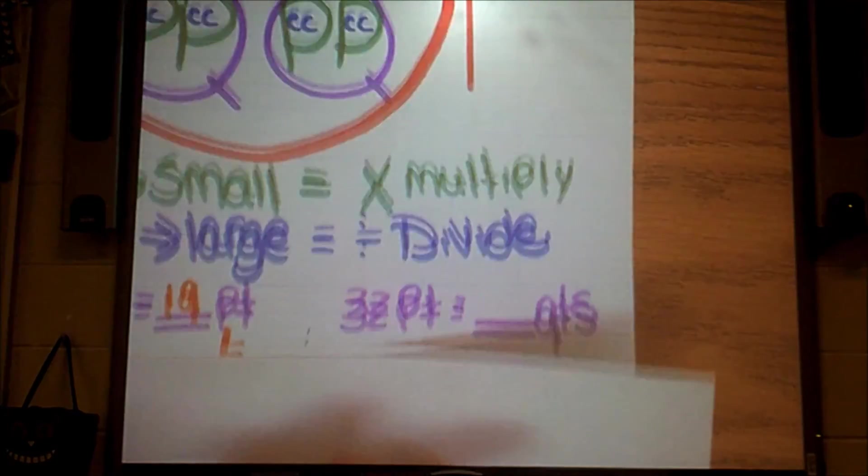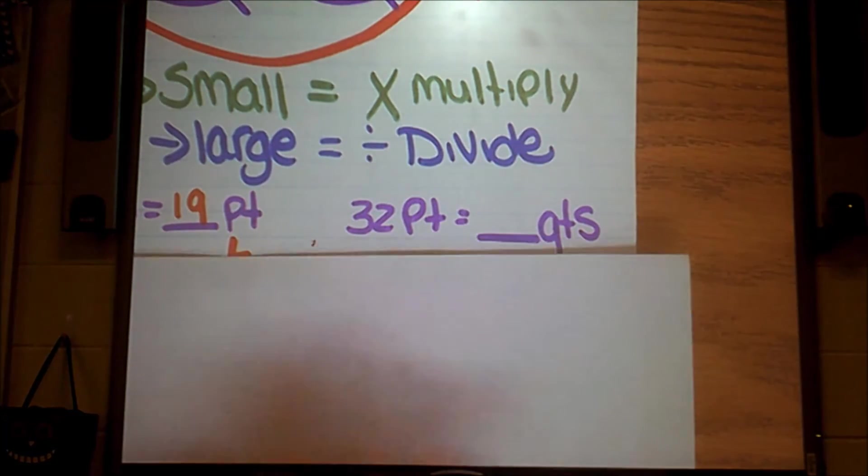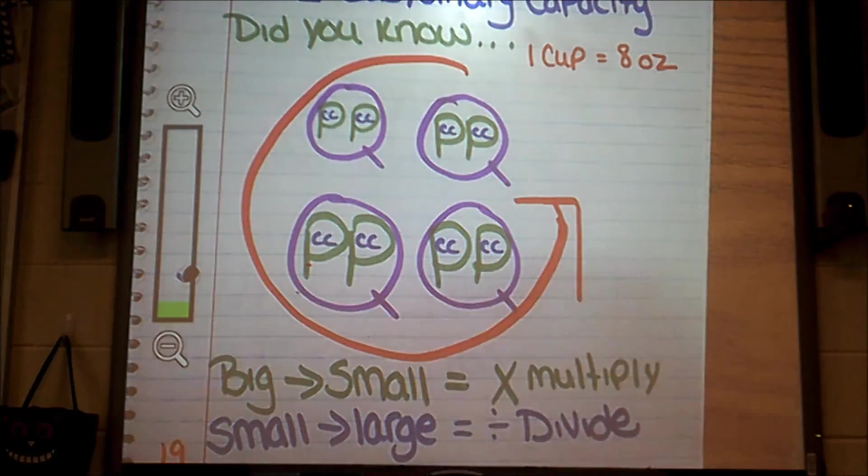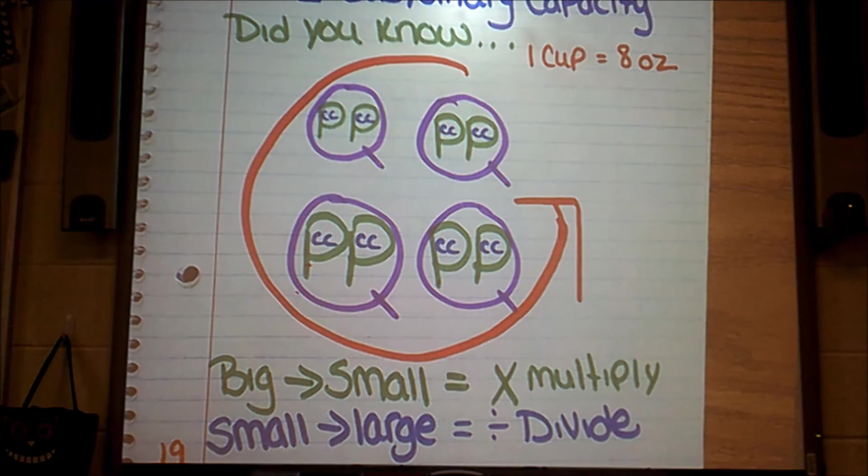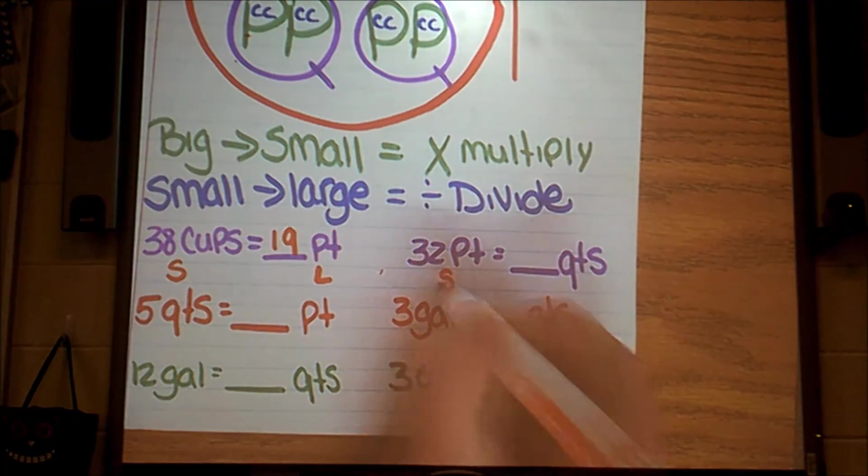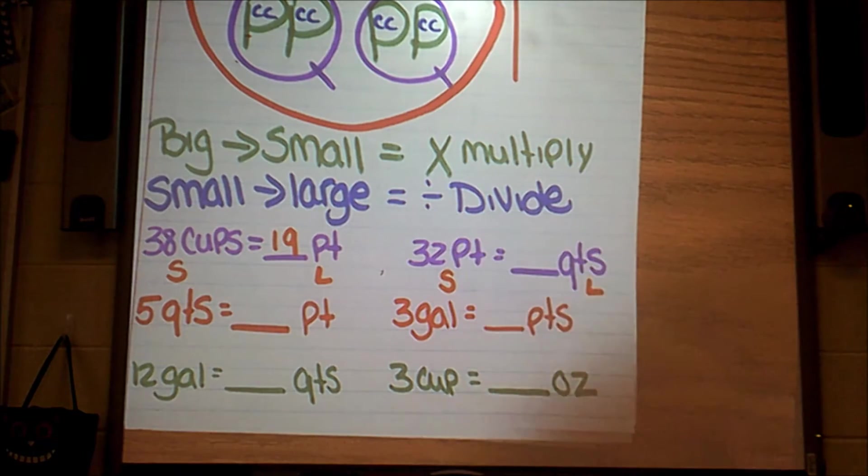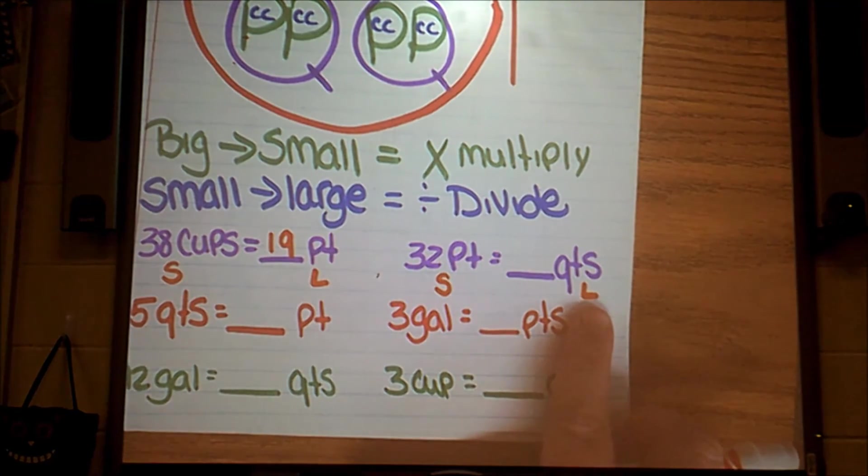Let's try another one. So for this problem, I want to convert 32 pints, PTs, into quarts. I want to know how many quarts there are in 32 pints. So again, I'm going to look at my big G, and I'm going to determine what is larger, a pint or a quart? Now my pint is inside my quart, according to my big G. So that tells me that a quart is larger than a pint. So again, just like my first problem, I'm going from small to large, because my quart is my large one.